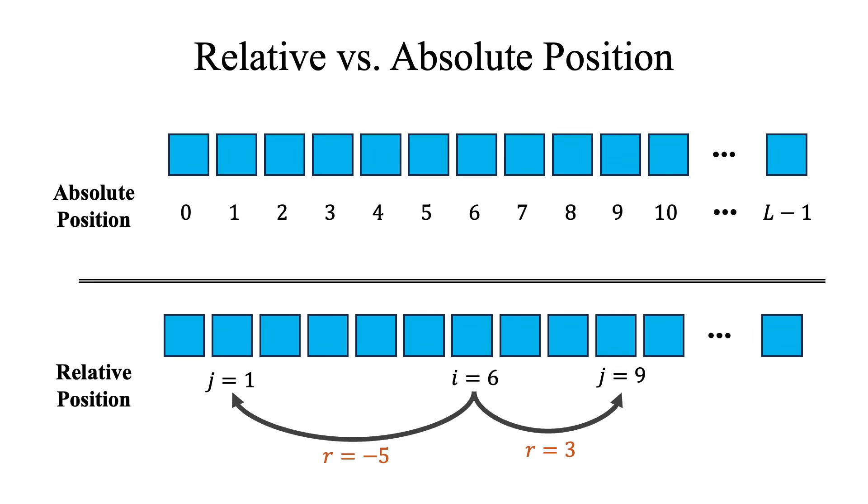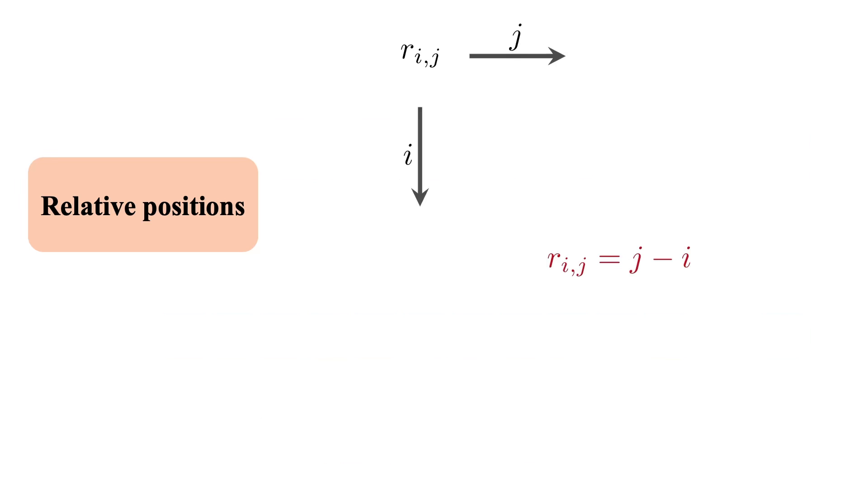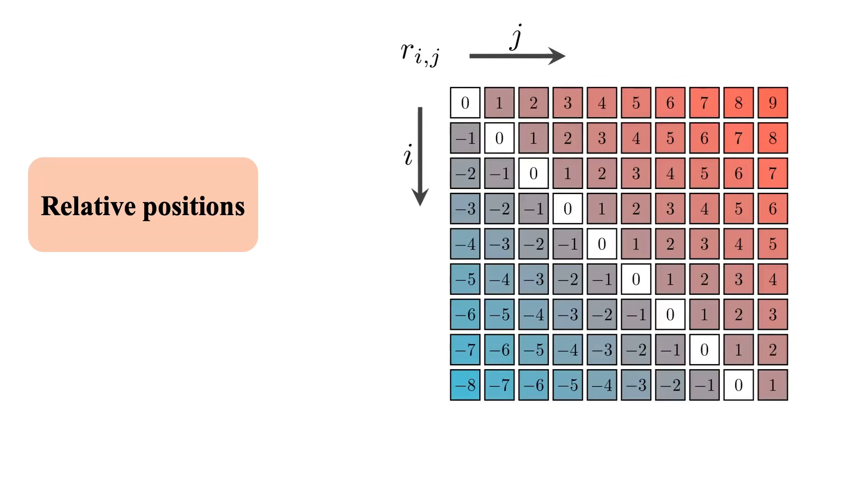This could be positive or negative, and now these relative positions form an L by L matrix rather than a vector. Let's look at an example relative position matrix. If the sequence length L equals 10, we can compute r_ij equals j minus i for all i and j combination pairs, which results in this 10 by 10 matrix. Notice that the diagonal of this matrix is 0, since the diagonal refers to the same position so i equals j and therefore r equals 0.